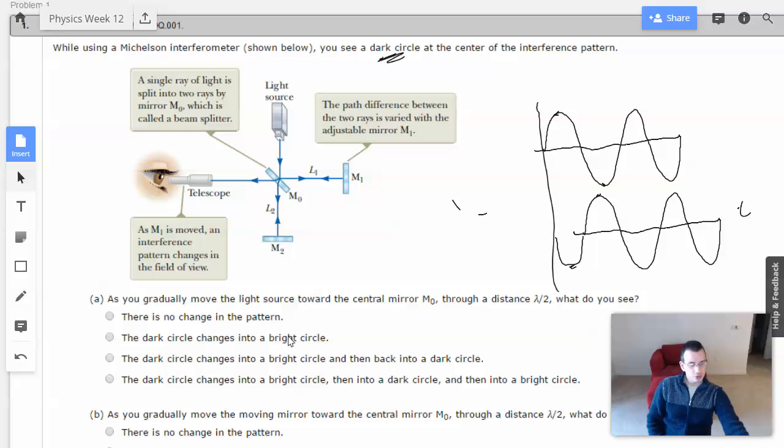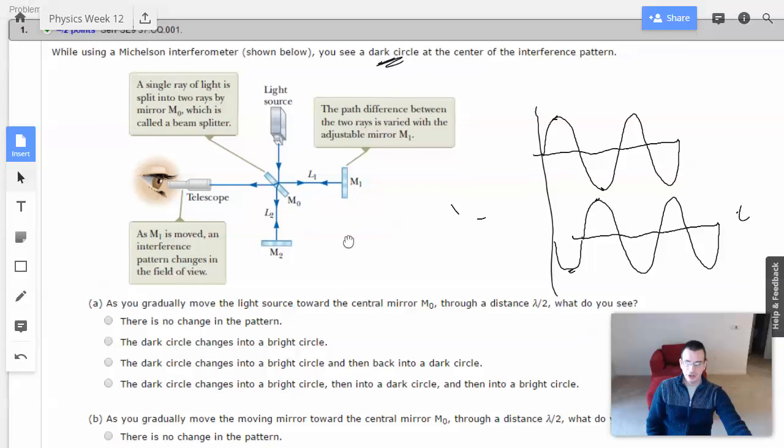So then you say, as you gradually move the light source toward the central mirror. So we got this guy right here, the light source right here, moving it towards the mirror through a distance lambda over 2, wavelength over 2. What do you see?